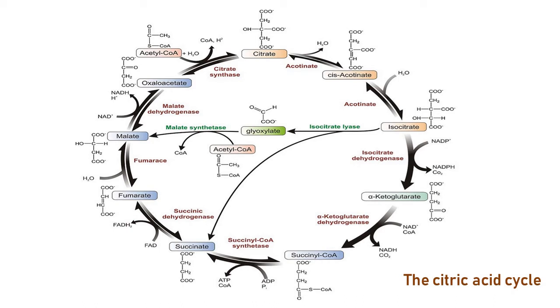Several of the citric acid cycle intermediates are used for the synthesis of important compounds, which will have significant cataplerotic effects on the cycle.